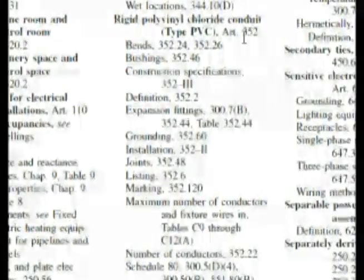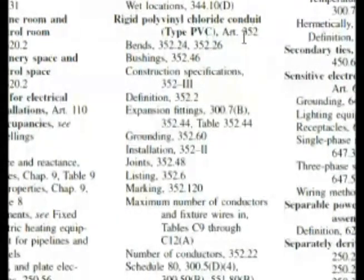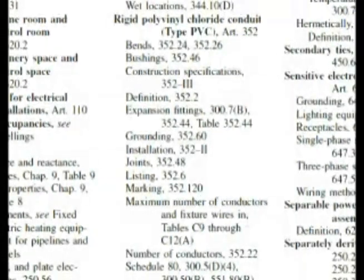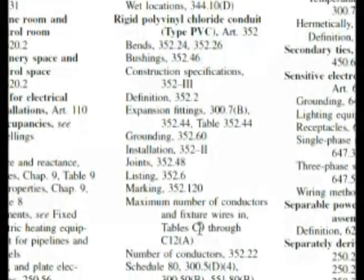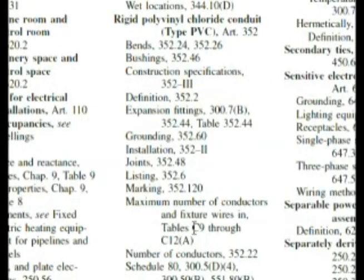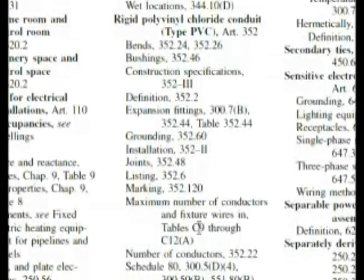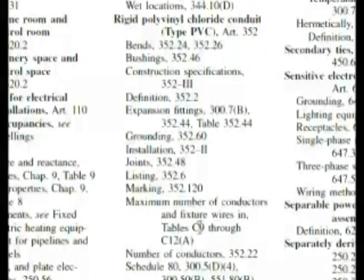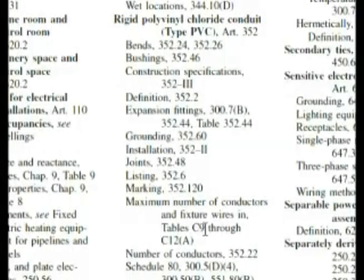Here we are in the index — you can see rigid polyvinyl chloride conduit, listed as PVC, leaving the R out for some reason. It's article 352, which comes past Table 310.16, one of our answer choices. We have maximum number of conductors and fixture wires in tables C9 through C12A. This is actually Annex C, and Annex C9 through C12A deals a lot with wire fills for PVC.